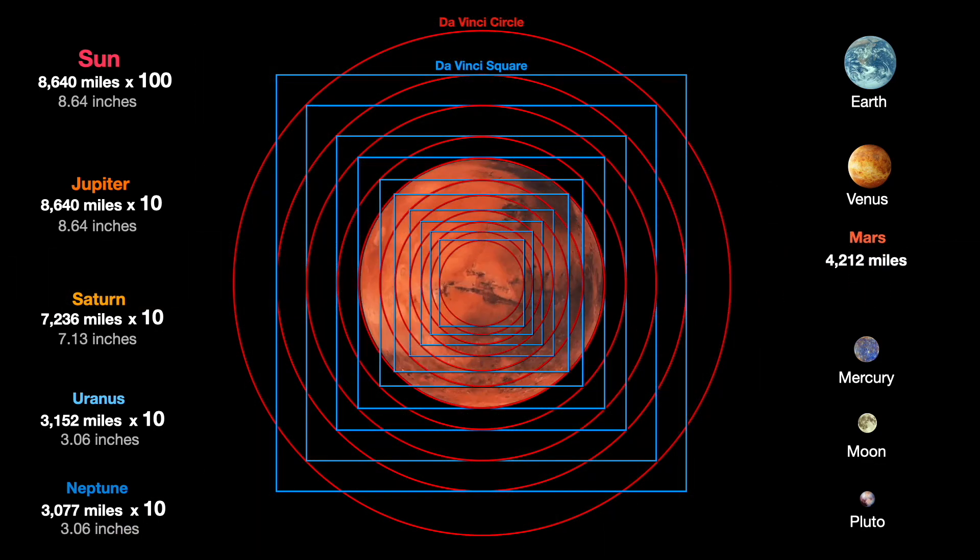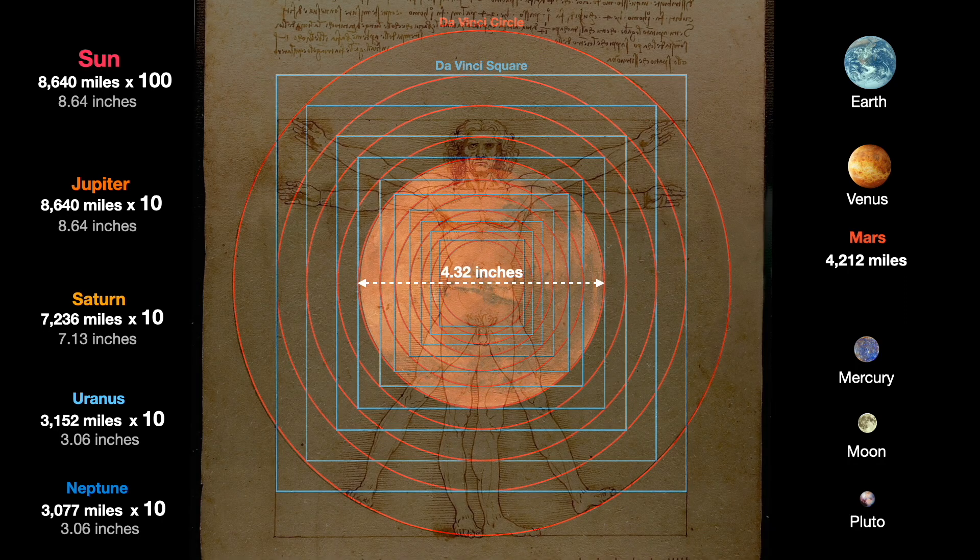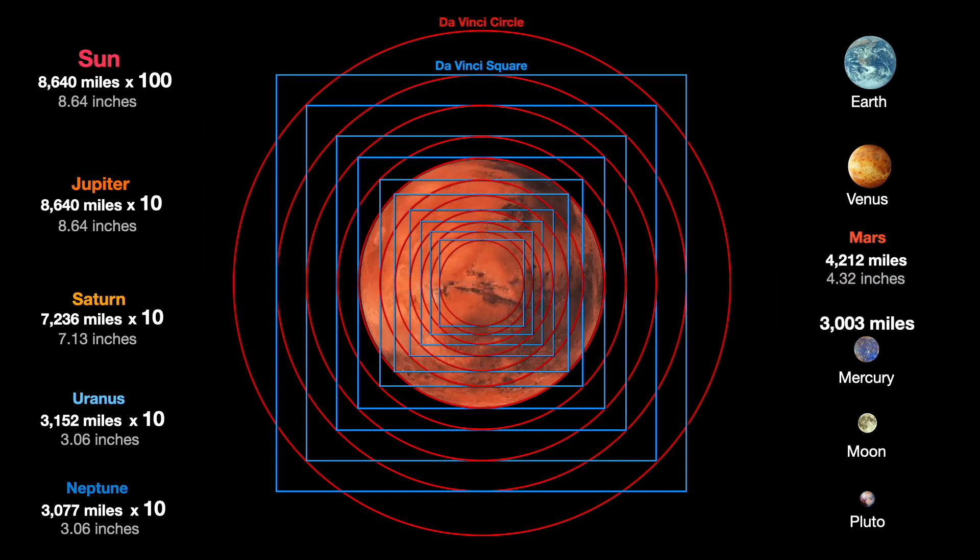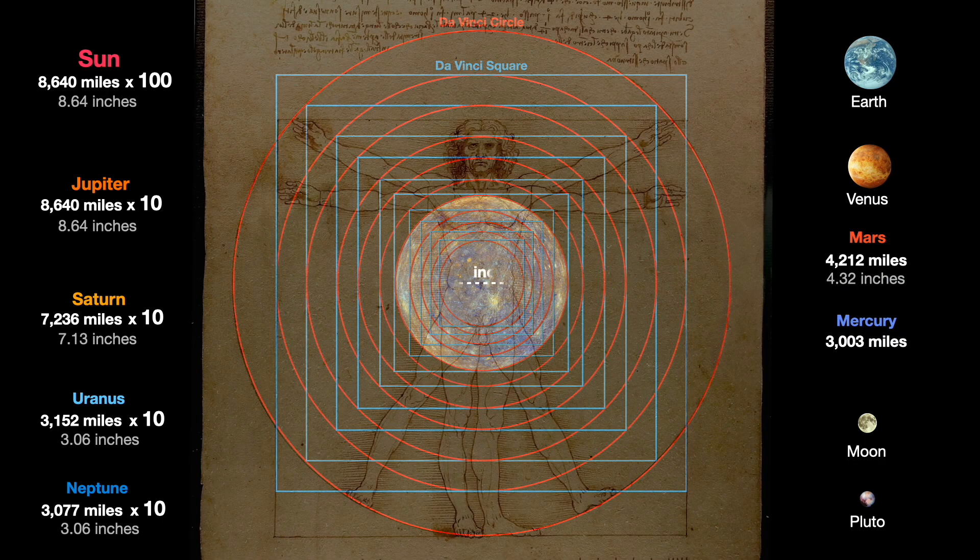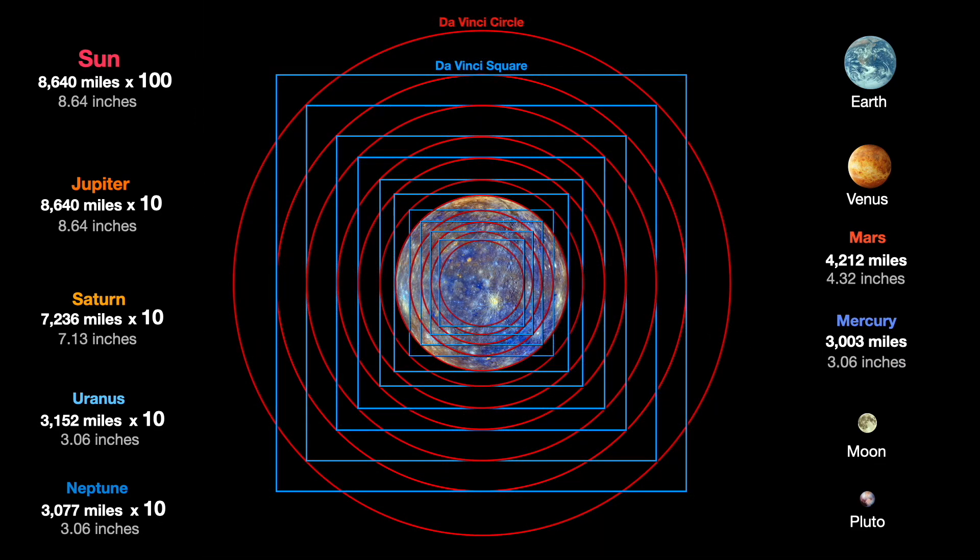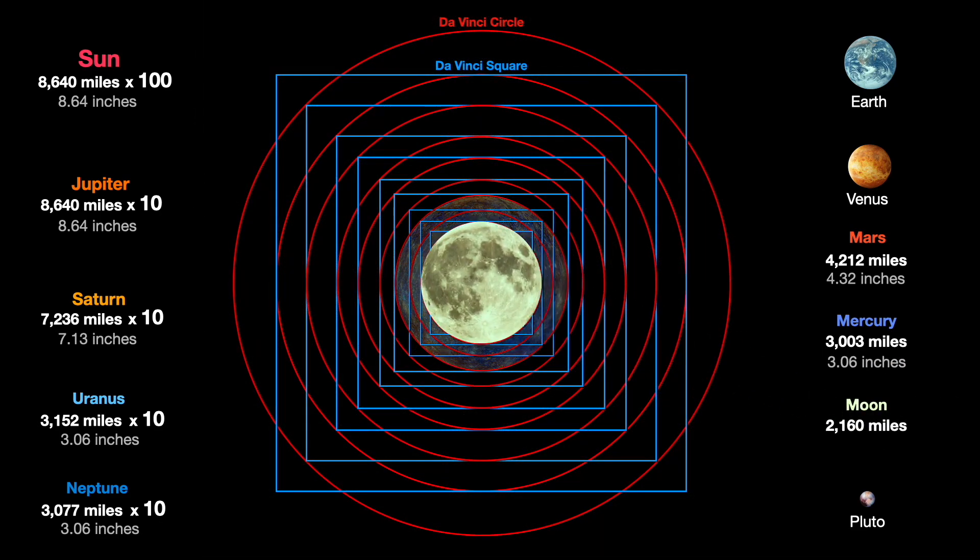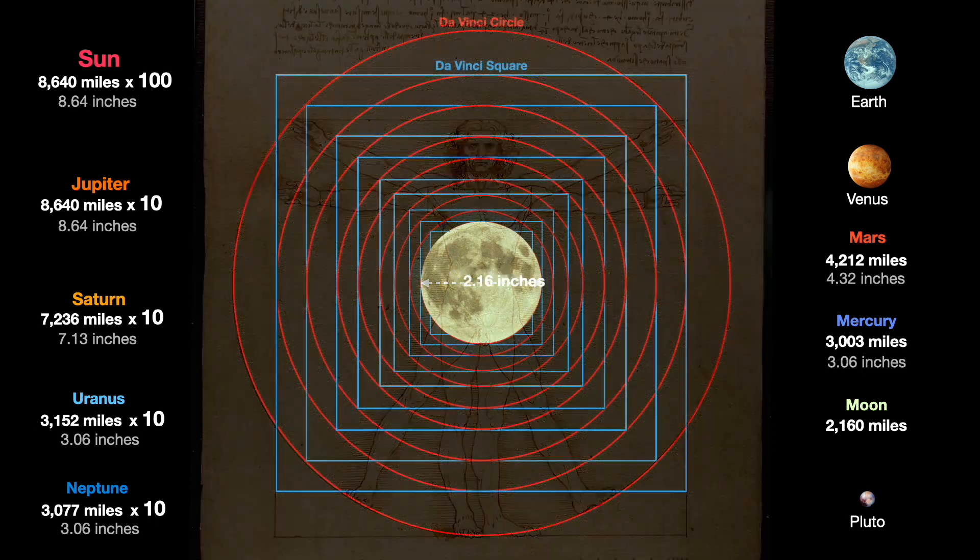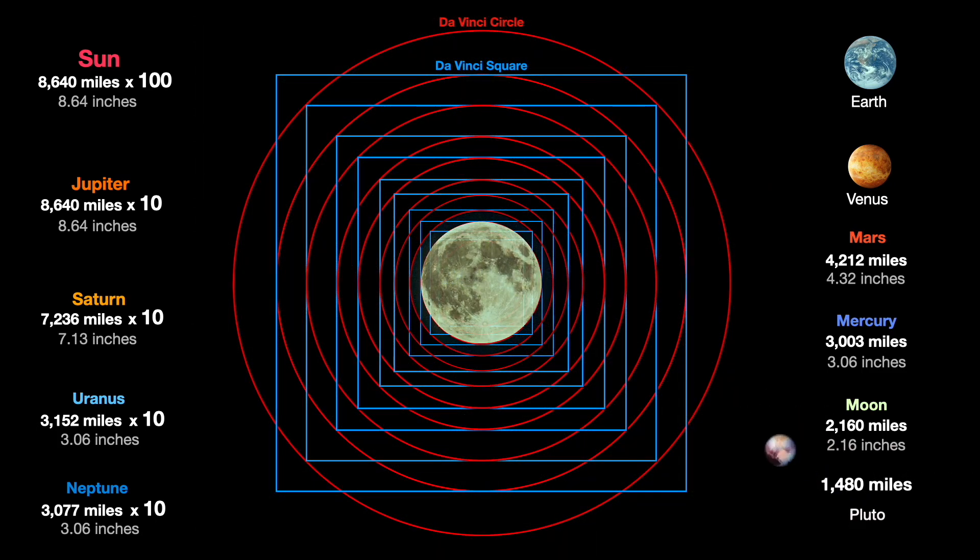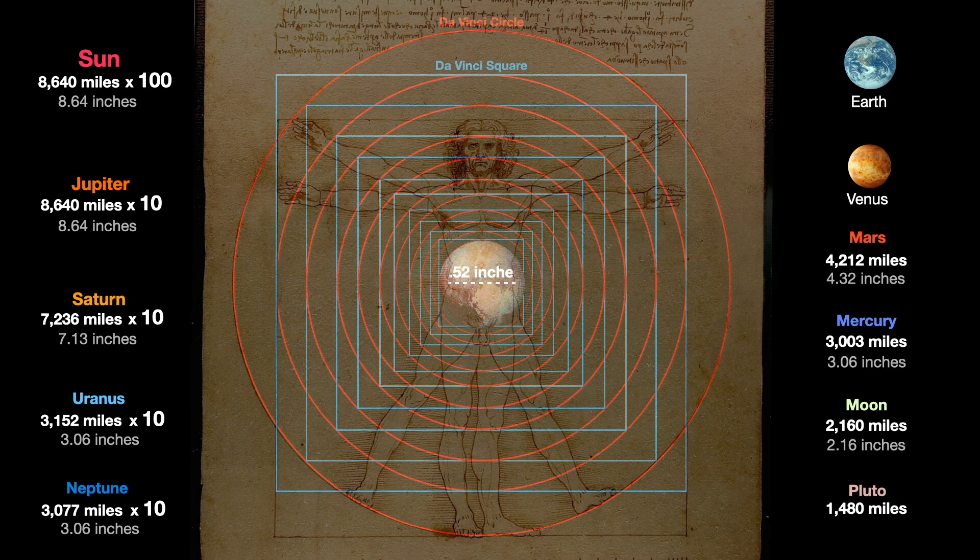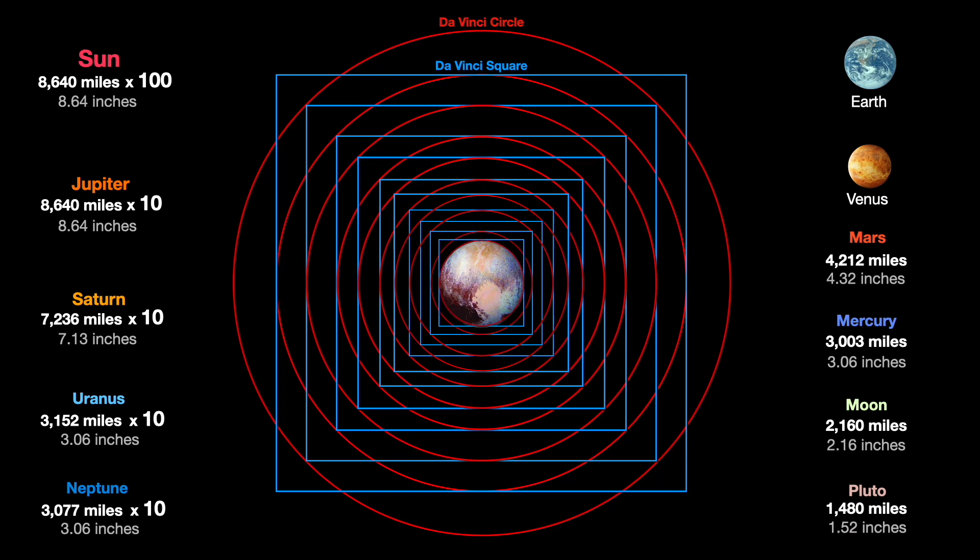Mars is about 97.5% accurate. Mercury, 98.1%. The Moon is a perfect 100% accuracy and Pluto comes in at 97.4%. So everything is looking extraordinarily close.